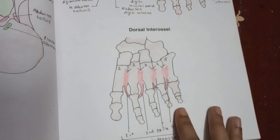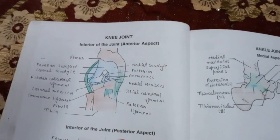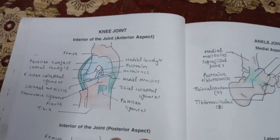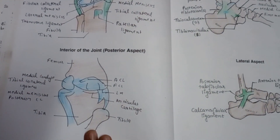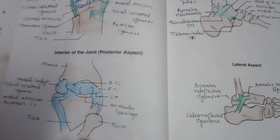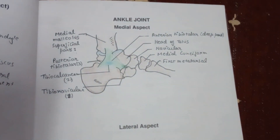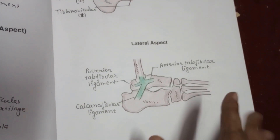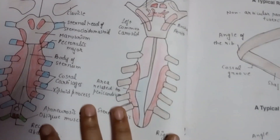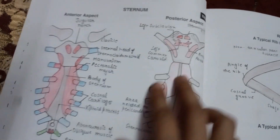This is the deep dissection of the sole, plantar interossei and dorsal interossei. This is the diagram of your knee joint — inferior view of the knee joint, this is your posterior aspect — and after that here comes the ankle joint and your lateral aspect of your ankle joint.